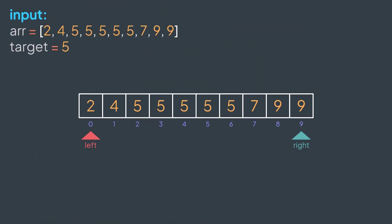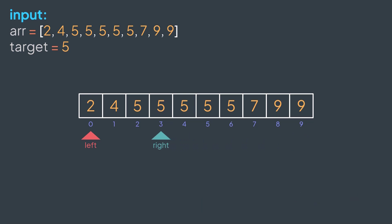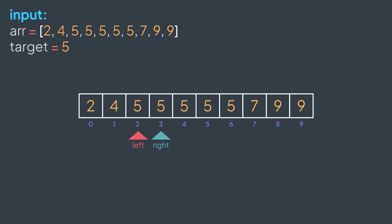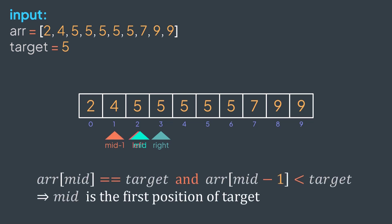Let's try it with our example. Left and right start at the first and last element of r as usual. Mid is left plus right divided by two — we get four here. It's true that r[4] is equal to target, but it's not enough: r[4-1] is not smaller than target, so mid is not the starting position of target. Since r[mid] is not greater than target, the first position can only be in the left part. We continue: mid is now zero plus three divided by two — we get one. r[1] is smaller than target, so the starting position can only be in the right part. We continue: mid is now two plus three divided by two, which is two. r[mid] is equal to target and r[mid-1] is smaller than target, so mid represents the first position of target — we return it.